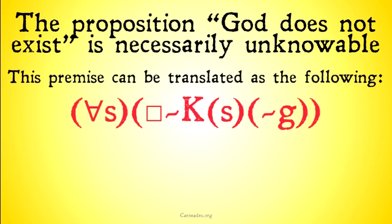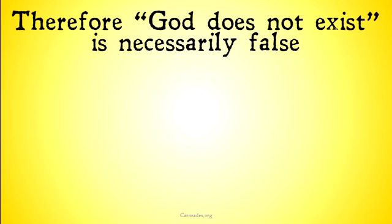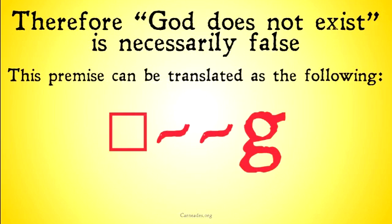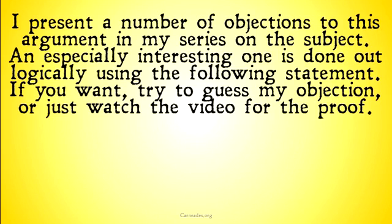This second premise can be translated as: where G means God exists, for all subjects S, it is necessary that it is not the case that S knows that God does not exist. Therefore, 'God does not exist' is necessarily false. This conclusion can be translated as: it's necessary that it's not the case that it's not the case that God exists — which, through double negation, we can turn into: it's necessary that God does exist.